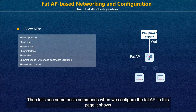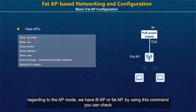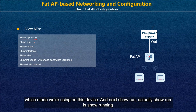Let's see some basic commands when configuring the FATAP. This page shows commands to view APs or check the running status of APs. First, 'show AP mode' — regarding AP mode, we have FATAP or FITAP. Using this command, you can check which mode is running on the device.